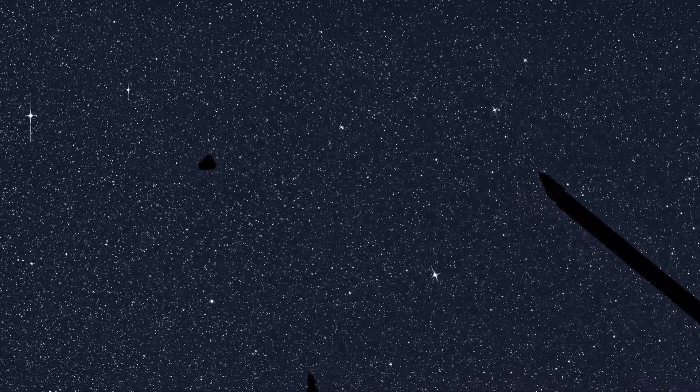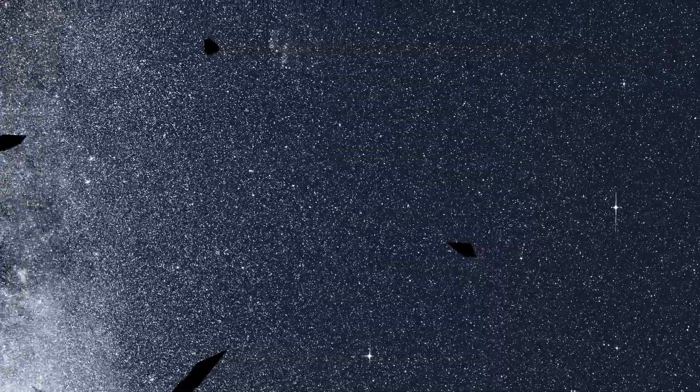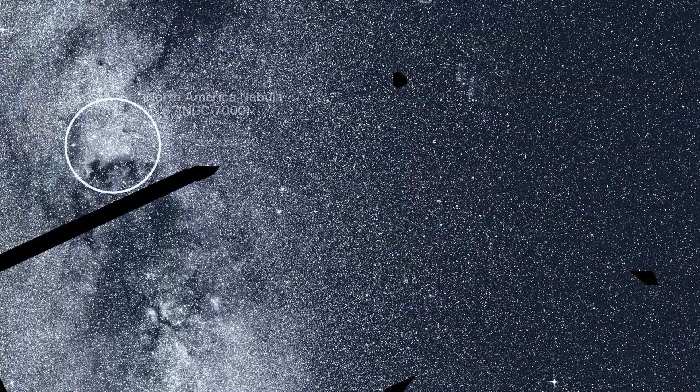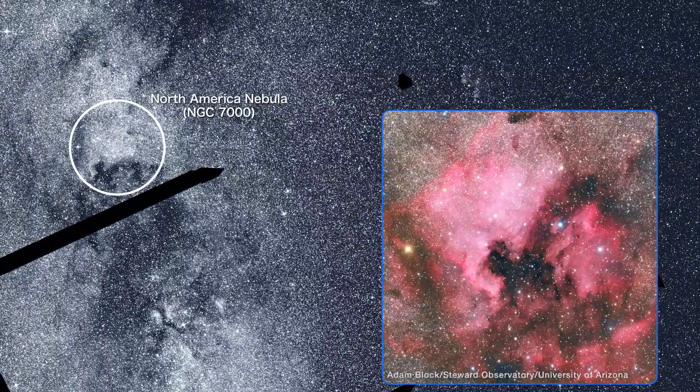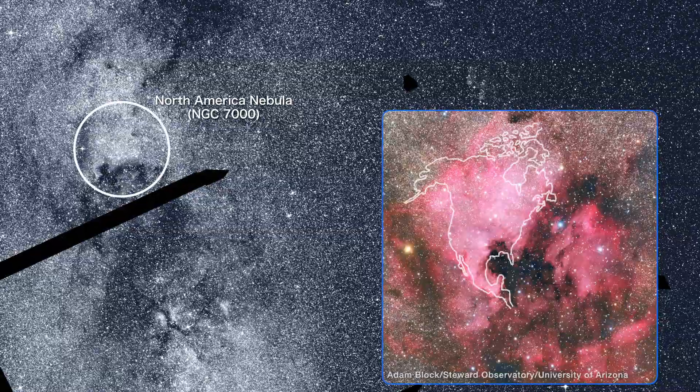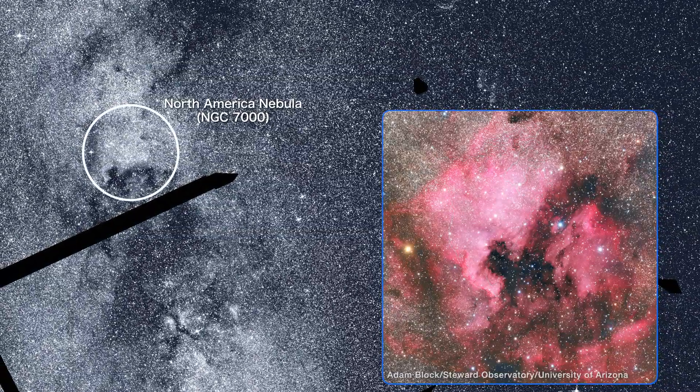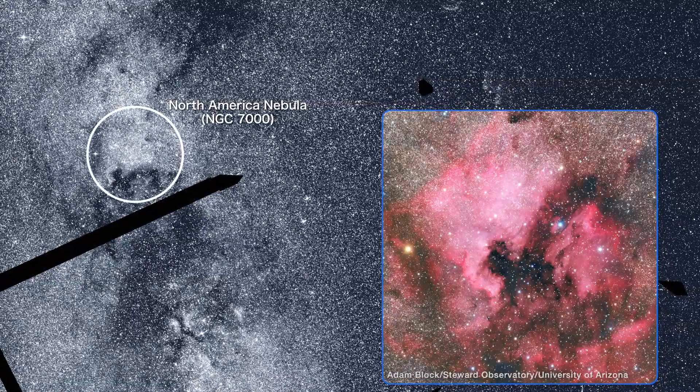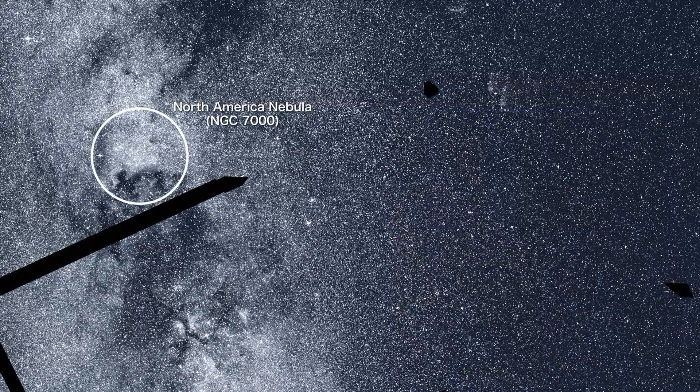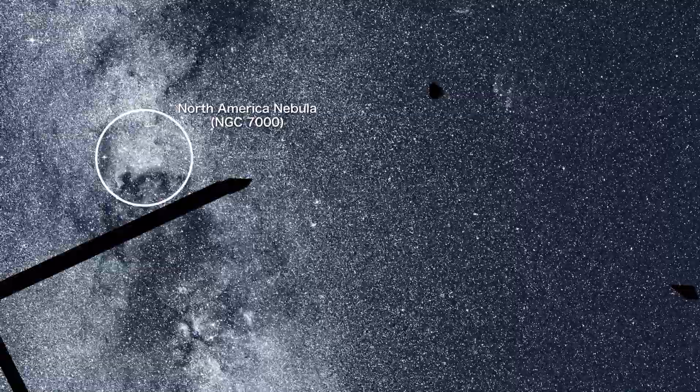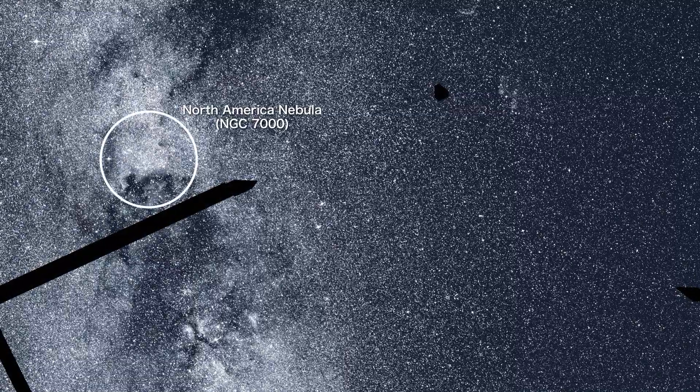New stars form in gas-rich clouds throughout our galaxy. The North America Nebula, named for its resemblance to the continent, is a prominent example. Located about 1700 light-years away in the constellation Cygnus, it's part of a vast factory complex with enough gas to make 100,000 sun-like stars.